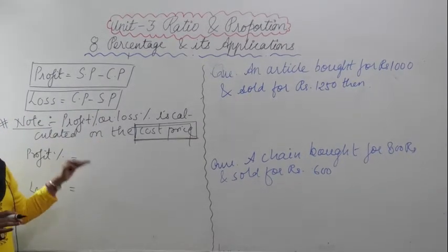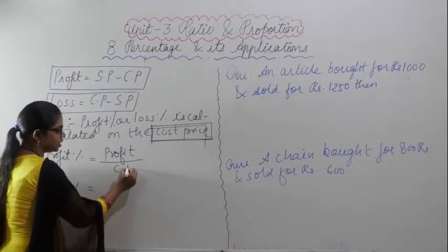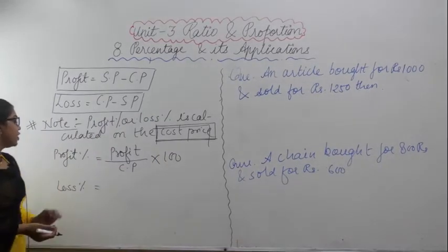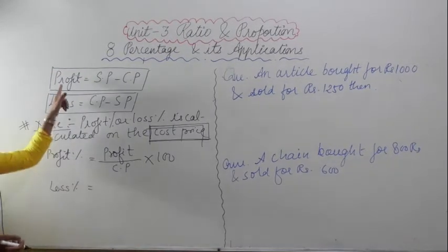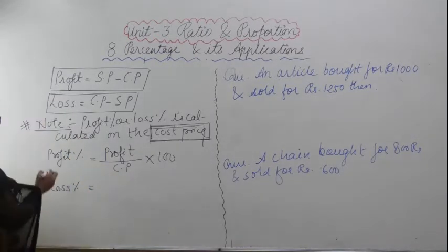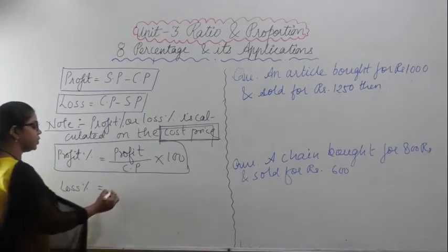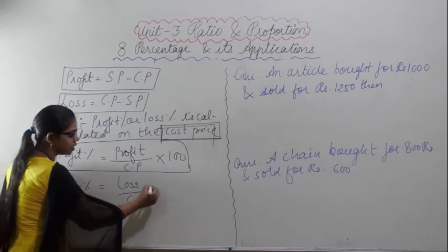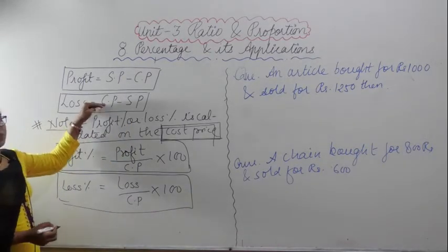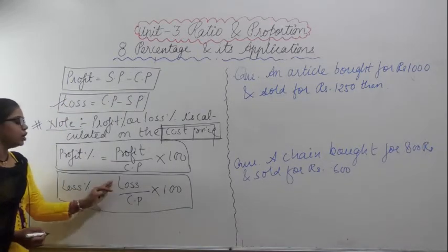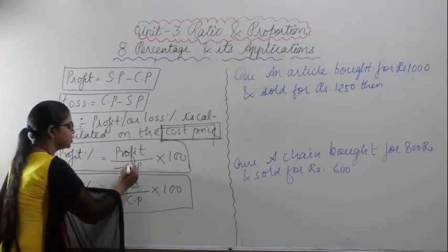What is the formula for profit percent? Profit upon CP into 100 — whatever profit you have got, divided by cost price, multiplied by 100. Similarly, what is the formula for loss percent? Loss upon CP into 100. Profit or loss percent is calculated on the cost price — this is very important.